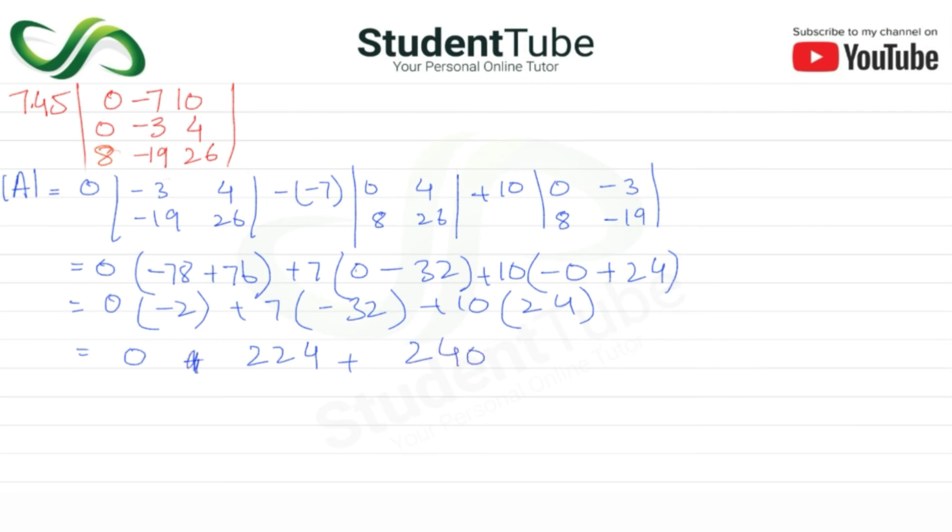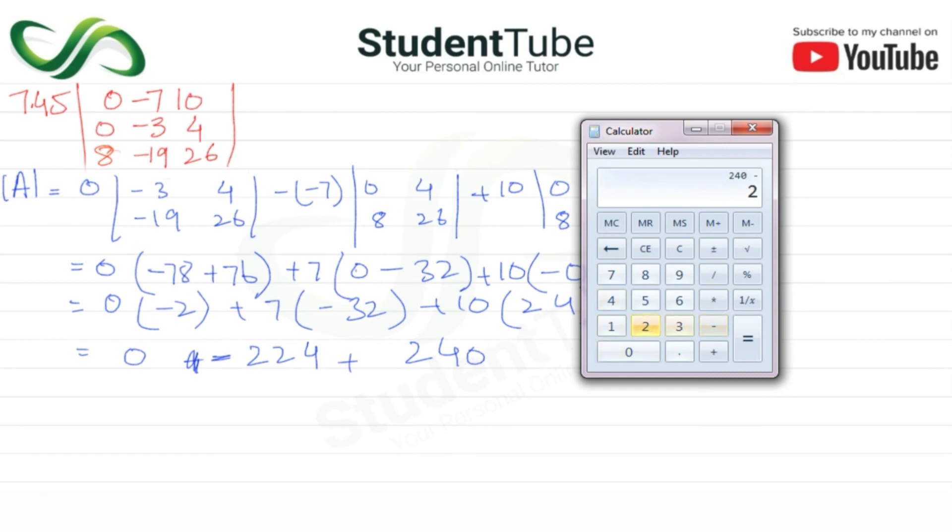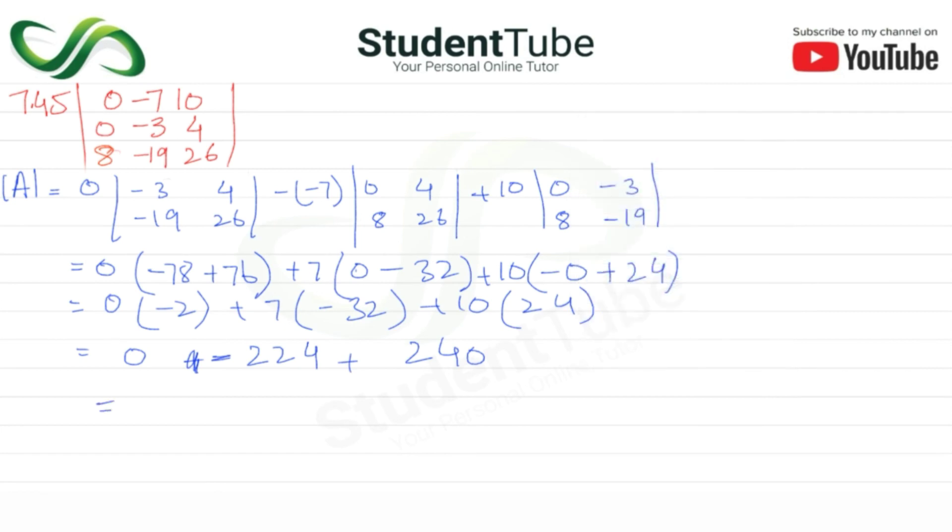This is plus minus minus. 240 minus 224 is 16. So the answer is 16.